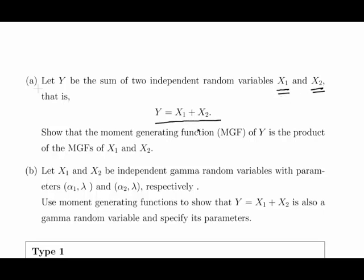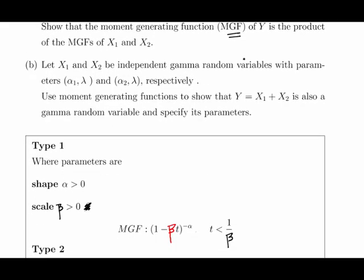So Y is equal to X1 plus X2. Show that the moment generating function, which is to say the MGF of Y, is the product of the MGFs of X1 and X2.